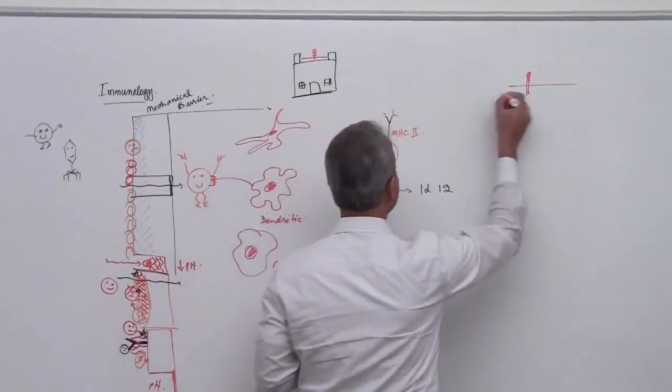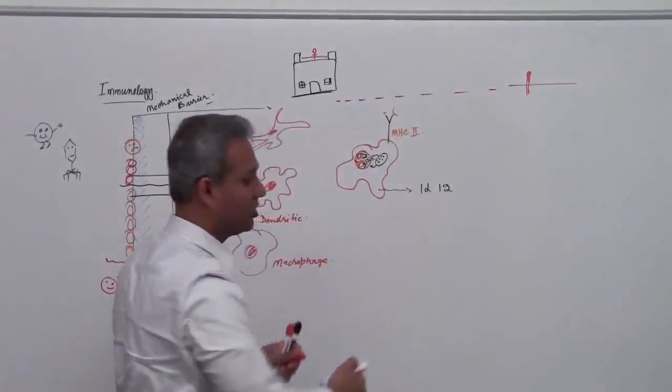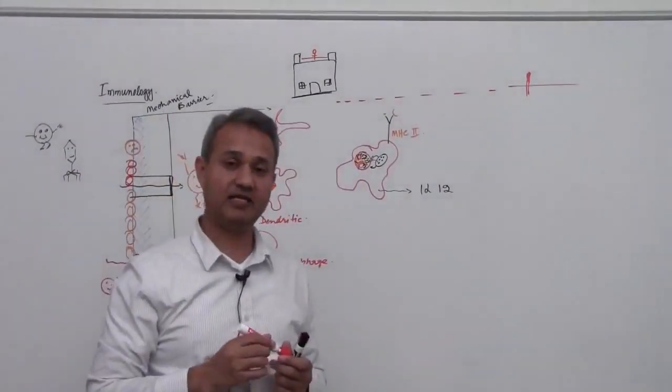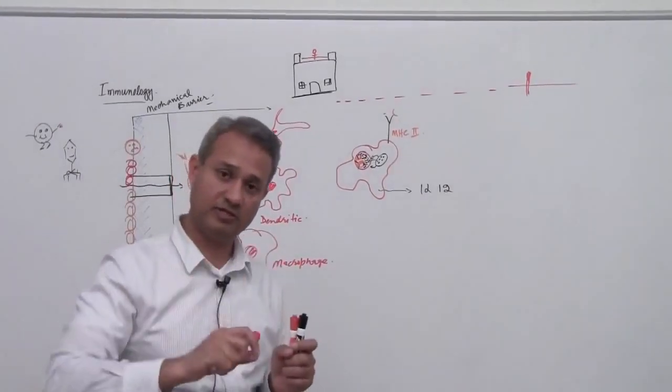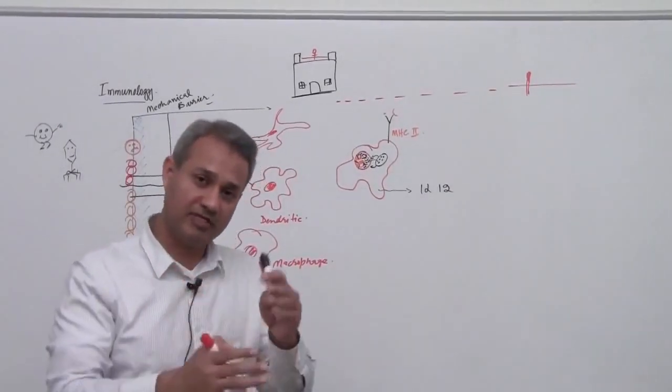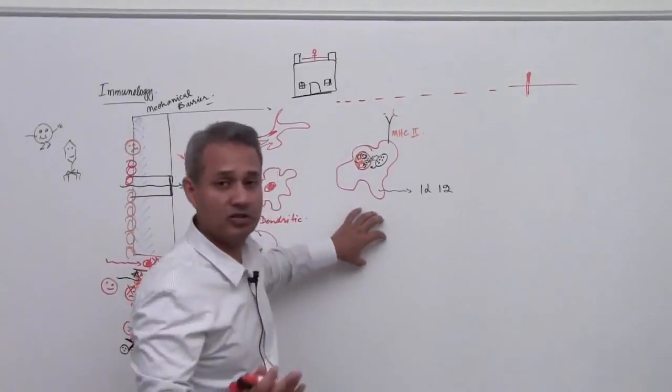And we would see more that this whole thing is called innate arm, innate arm of the immune system. So we will talk more about various arms and how do they work. At this time, this is the innate response.